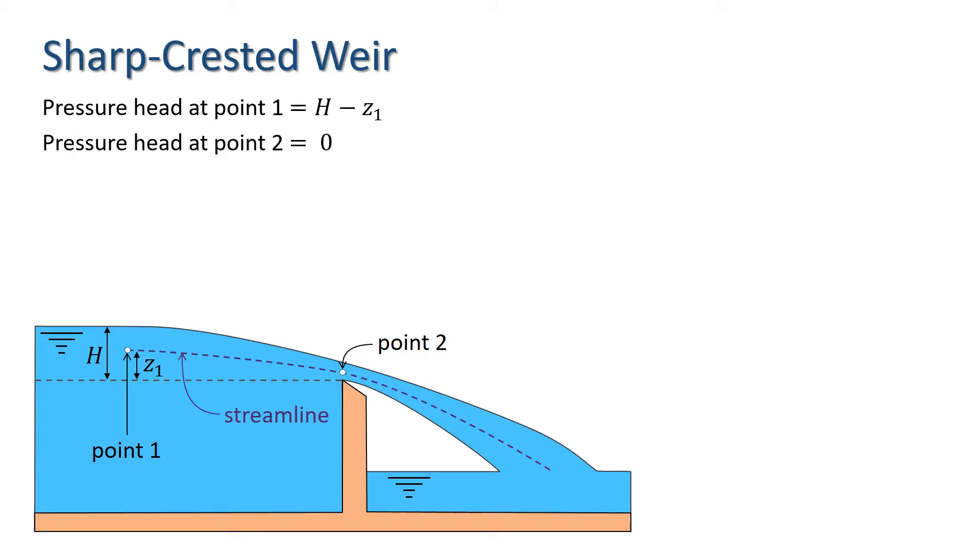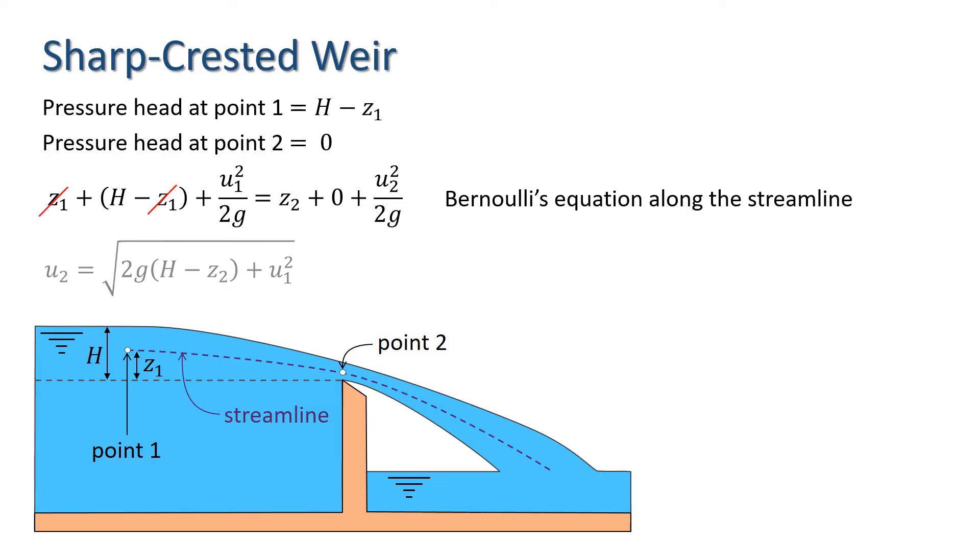We can apply Bernoulli's equation along a streamline between point 1 and point 2. Assuming no energy losses, we have Z1 plus H minus Z1 plus U1 squared over 2G equals Z2 plus 0 plus U2 squared over 2G. Rearranging this, we can see that U2 can be written as the square root of 2G times H minus Z2 plus U1 squared.